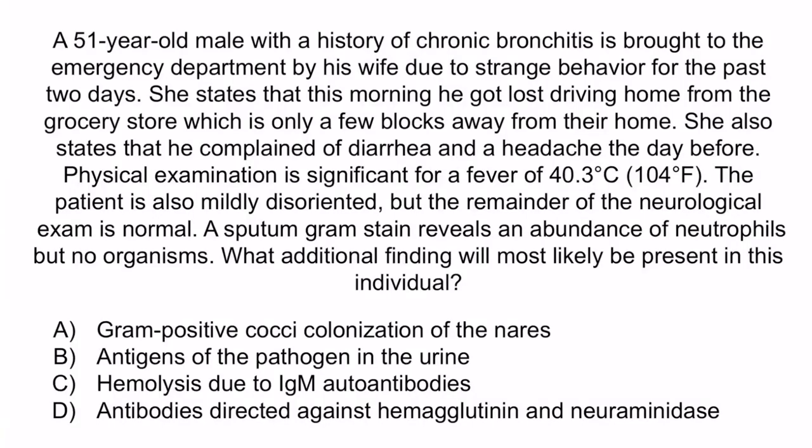A is incorrect because this is a reference to Staph aureus. Recall that Staph aureus colonizes the nares and can cause pneumonia, but it typically occurs following a viral infection. The patient's diarrhea and neurological symptoms, as well as the inconclusive gram stain, make this answer choice unlikely. C is a reference to mycoplasma pneumonia. Recall that this pathogen can cause walking pneumonia and can present similarly to Legionella. However, this typically occurs in younger patients who attend college or who are in the military, so this patient's age makes this less likely. The high fever and diarrhea also make this less likely.